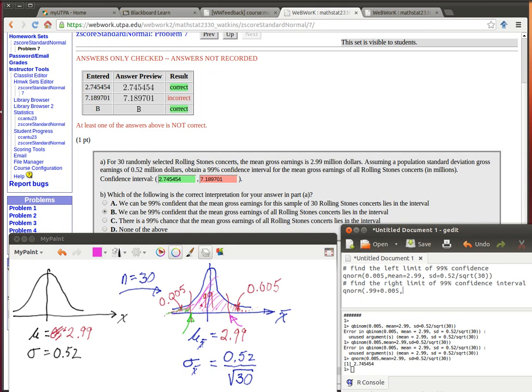So that's what we're looking for. That will be where our upper bound is. This is going to be in a mean of 2.99 and a standard deviation of 0.52 divided by the square root of 30.